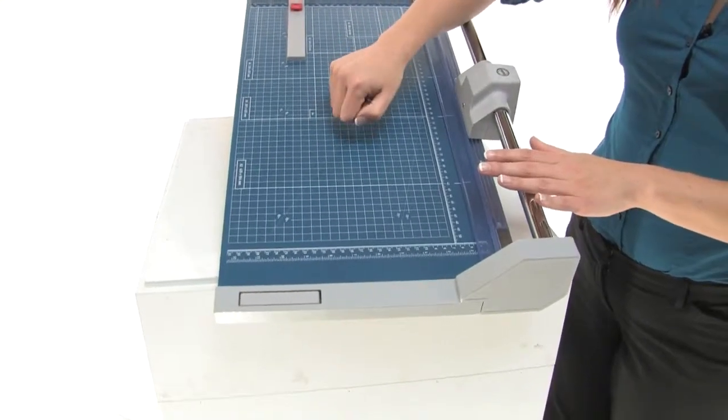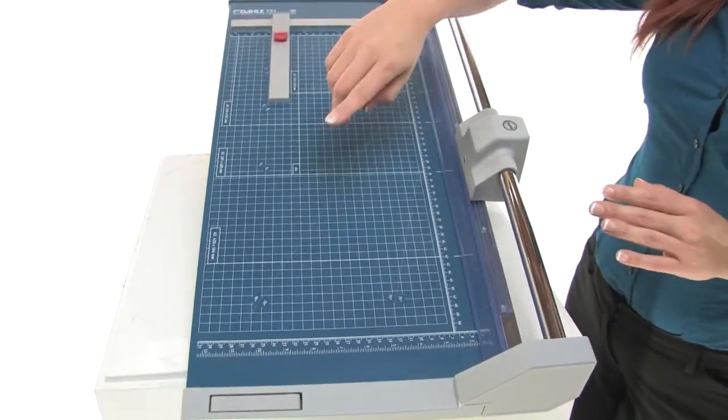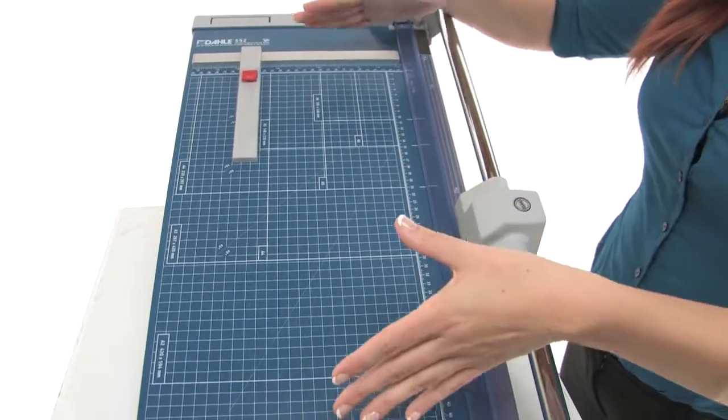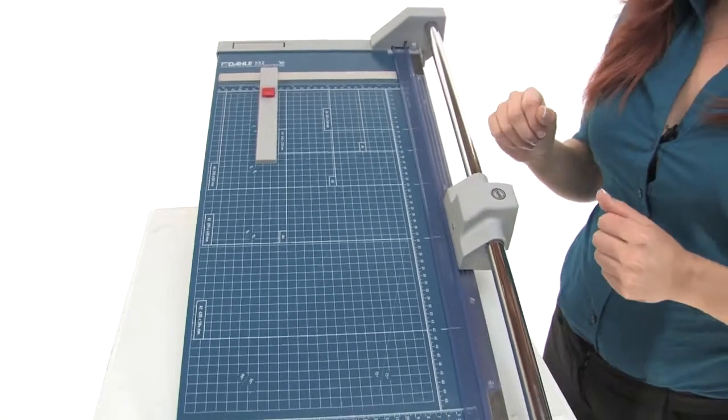It has a sturdy metal base that won't warp like wood bases. It has a pre-printed guide with inches and metric measurements and can cut paper just over 20 inches in length.